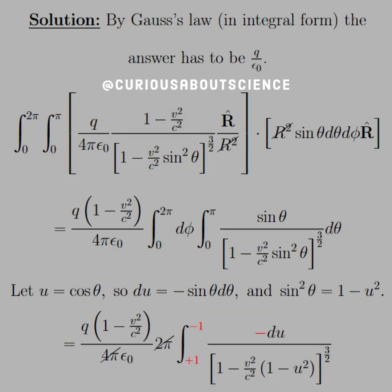So that's the field. We want to find this integral. By Gauss's law in integral form, the answer has to be Q over ε₀. Let's see if this actually holds up. Since we want the sphere centered at the present position of the charge, we integrate from 0 to 2π and 0 to π for our azimuthal and polar angles.